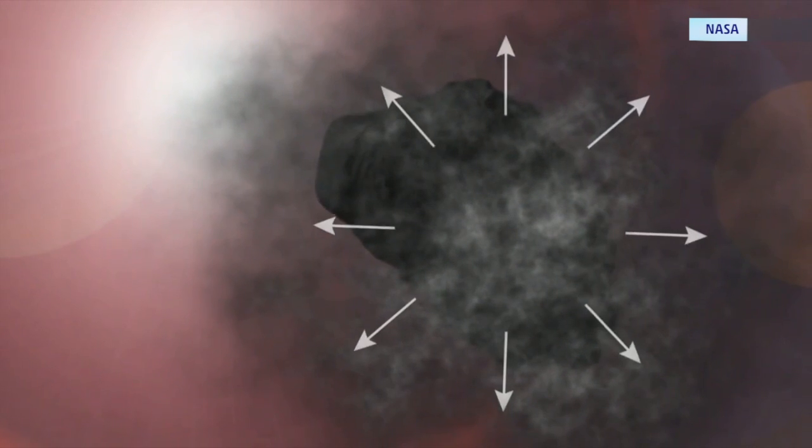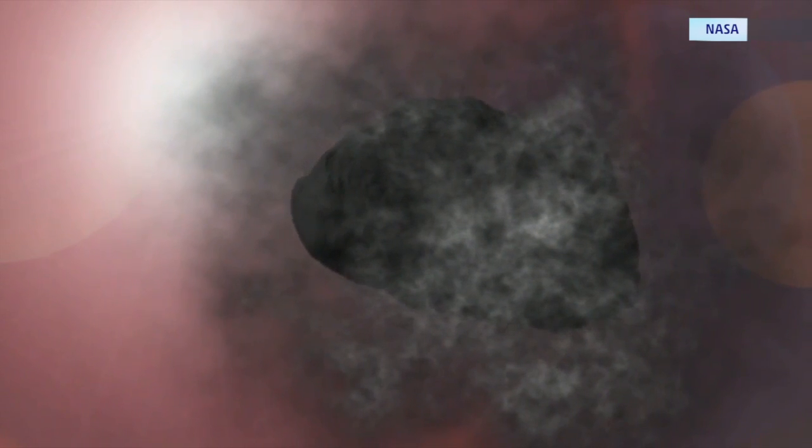The process of sublimation will help transfer the Sun's energy away from the comet's crust, keeping it cool.